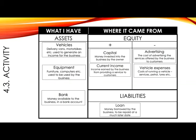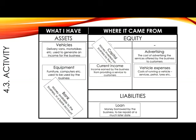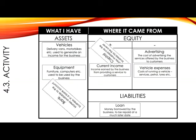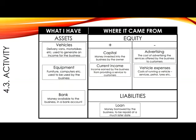For the first transaction, the owner contributed five Smarties to start the business. The two accounts affected here must be bank and capital, as money was received and the owner invested money. So we will place five Smarties in the assets box and five Smarties in the equity box.